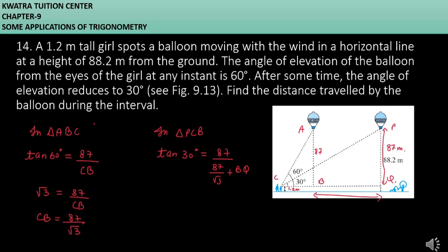Let's find out the value of BQ. Tan 30 value place first. Tan 30 is 1 by root 3, which equals 87 over 87 under root 3 plus BQ, equals 87.